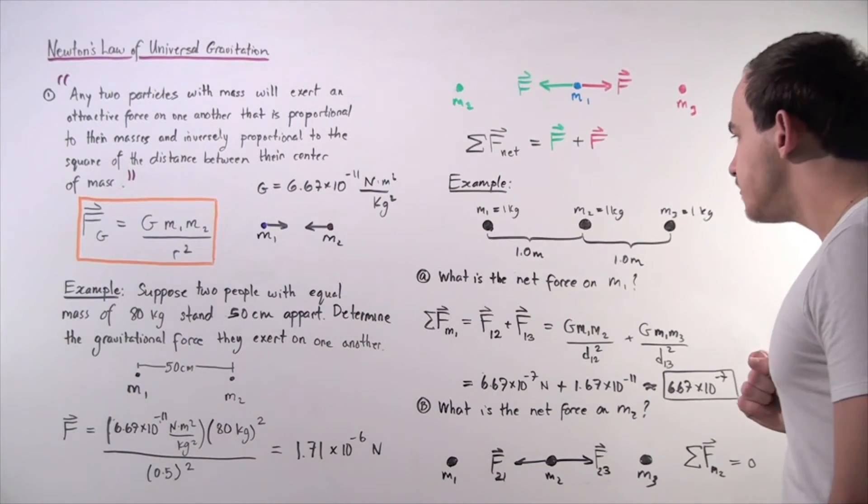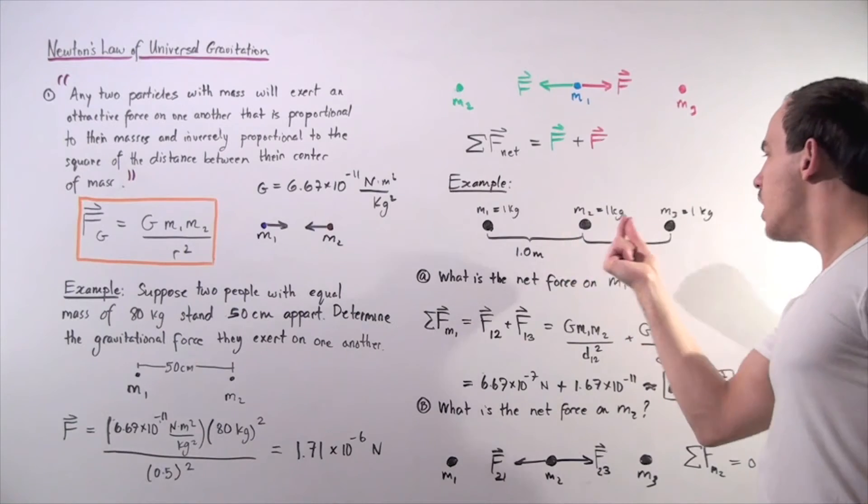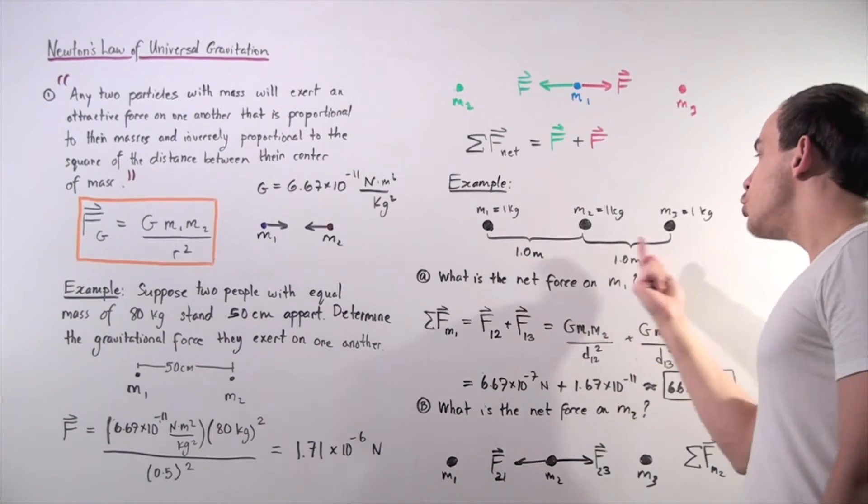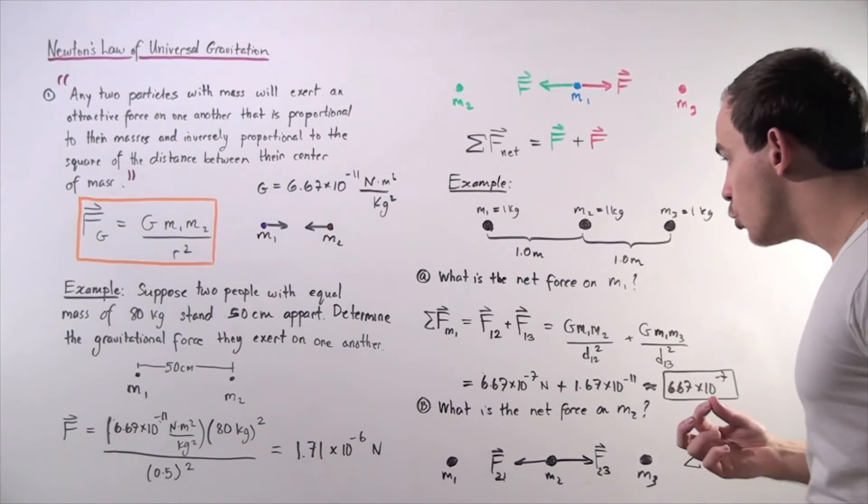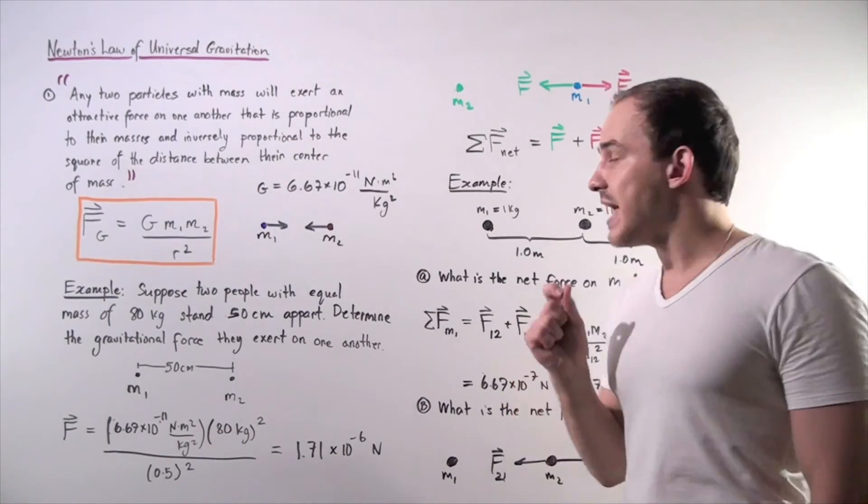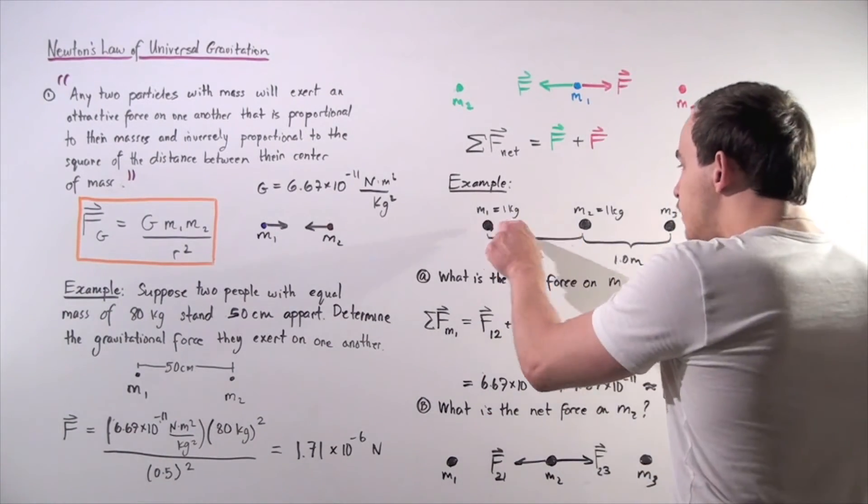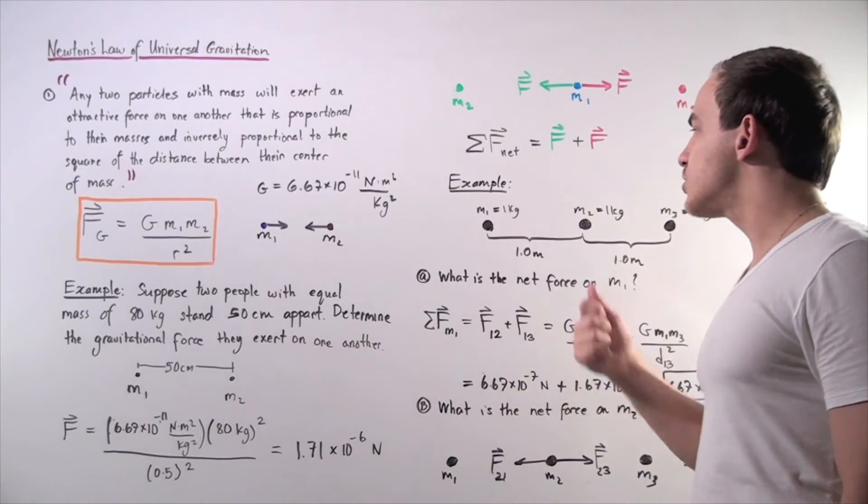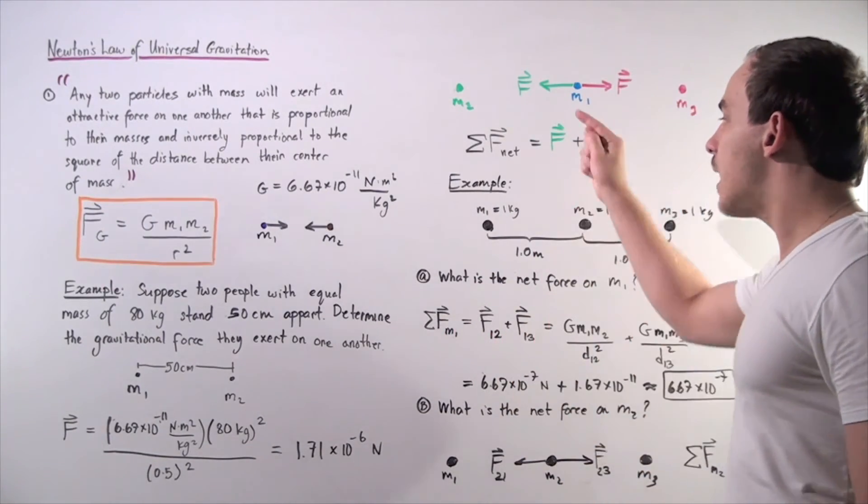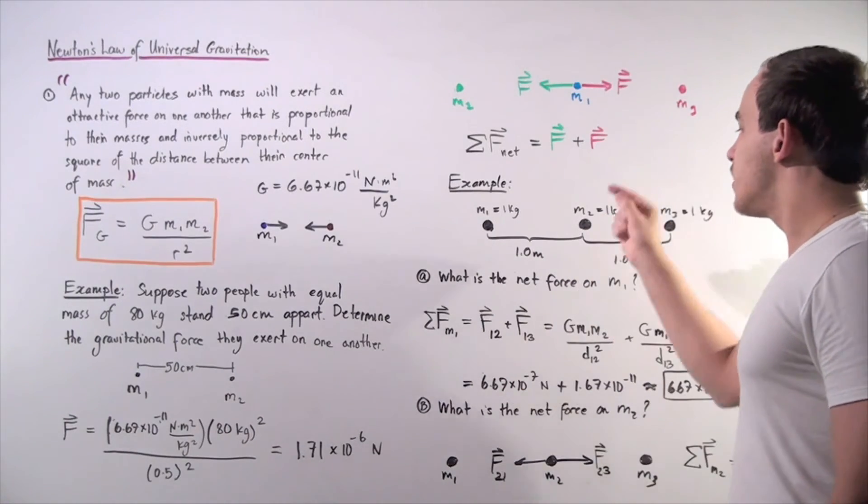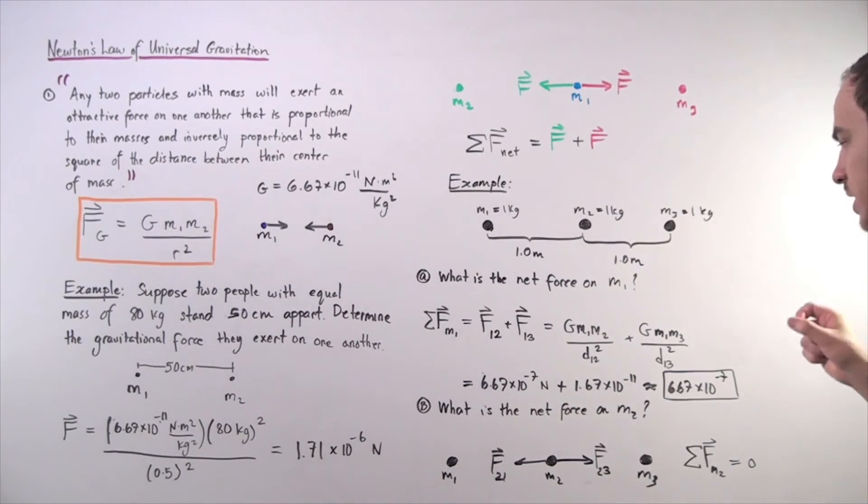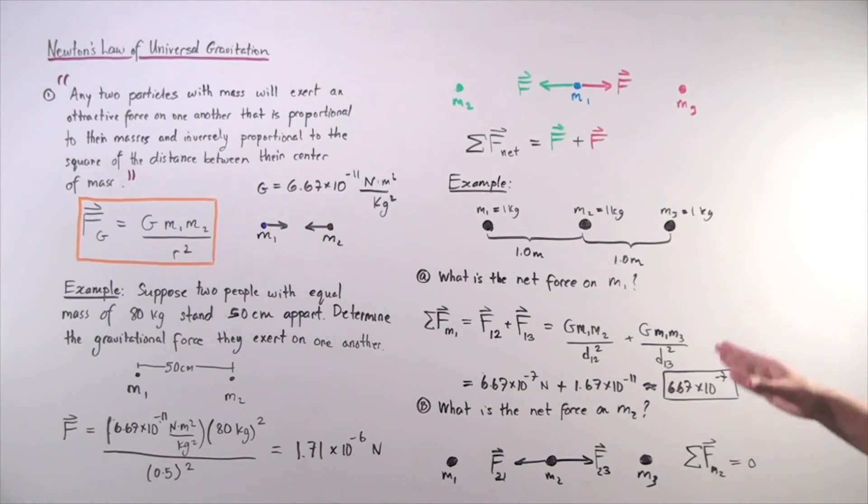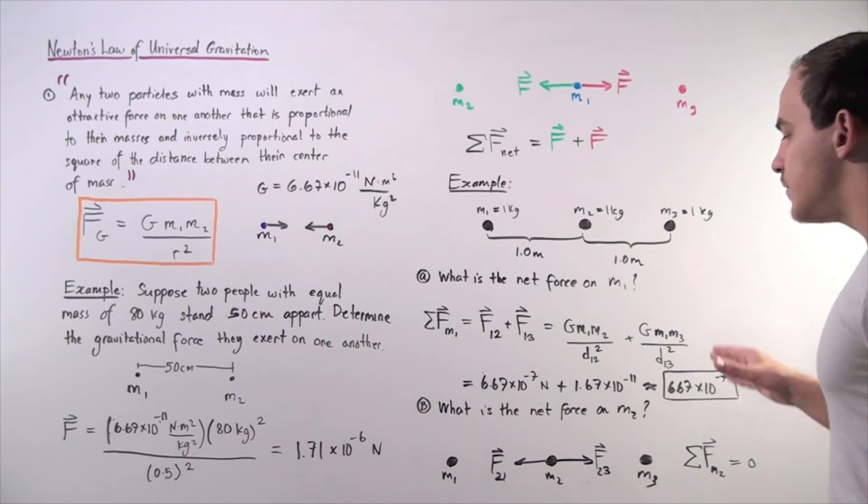What is the net force on mass one? Well, we have mass one and two objects. One object is one meter apart, and the second object is two meters apart, because one plus one is two. We simply sum up all the forces acting on mass one, so we have one force and a second force due to each of these objects. The sum of the forces acting on mass one equals the force acting on object one due to object two, plus the force acting on object one due to object three. We use our formulas, plug in our values, and get approximately 6.67 times 10 to the negative 7 newtons.